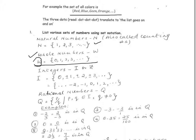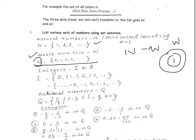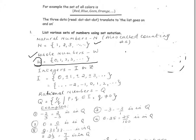So the set of whole numbers is zero, one, two, three, dot dot dot — the numbers are separated by commas and written inside the braces. Now, if we look at the two sets N and W, every number in N sits inside the set W. The set of natural numbers sits inside the set of whole numbers. The only number in W that is not a natural number is zero. So the set N is contained in the set W.